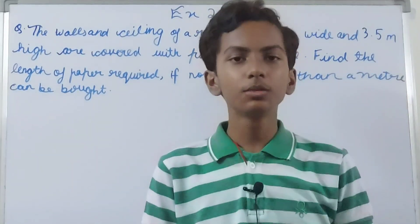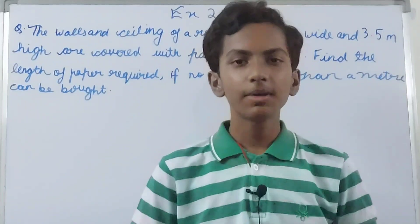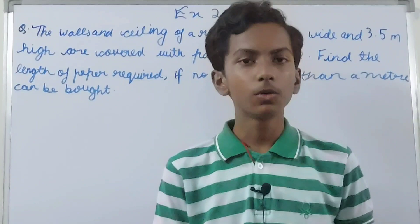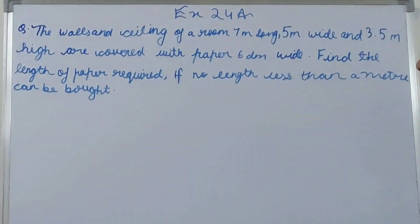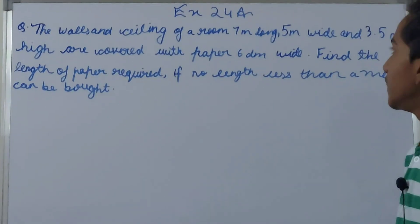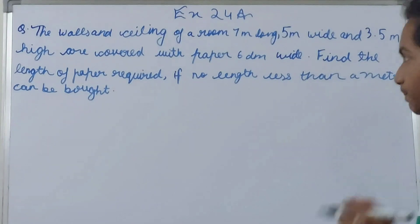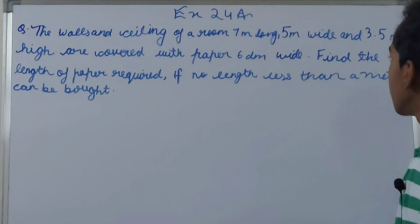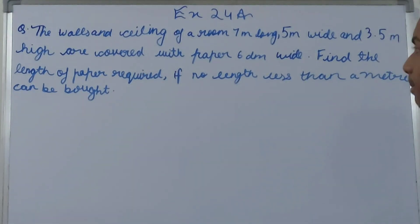Hello friends, welcome back to my YouTube channel Local Learning. In this video we are going to solve ICOG Mathematics Class 7, Chapter 24, Area and Perimeter, Exercise 24A, Question 21. The problem is: the walls and ceiling of a room seven meters long, five meters wide, and 3.5 meters high are covered with paper six decimeters wide. Find the length of the paper required if no length less than a meter can be bought.